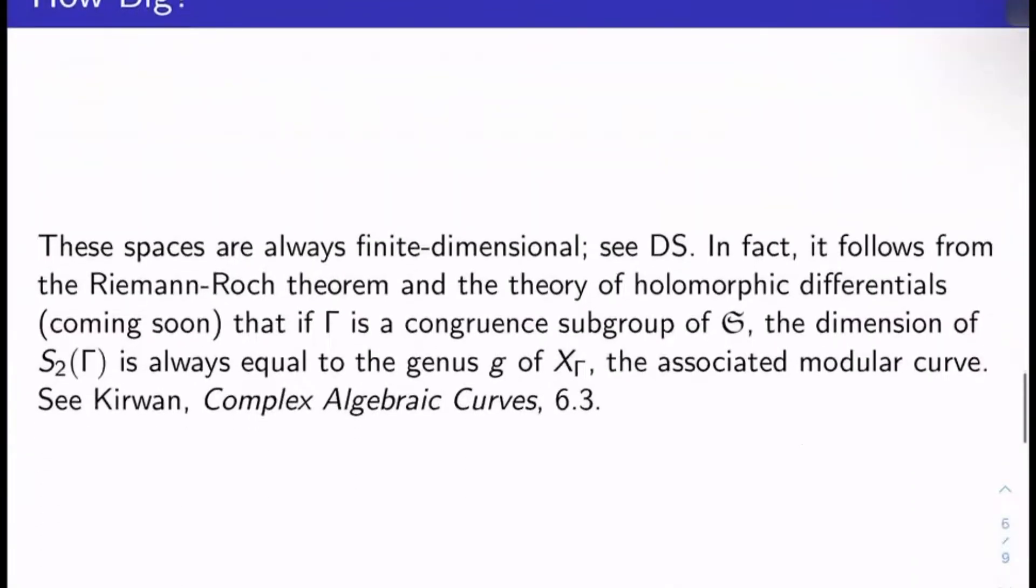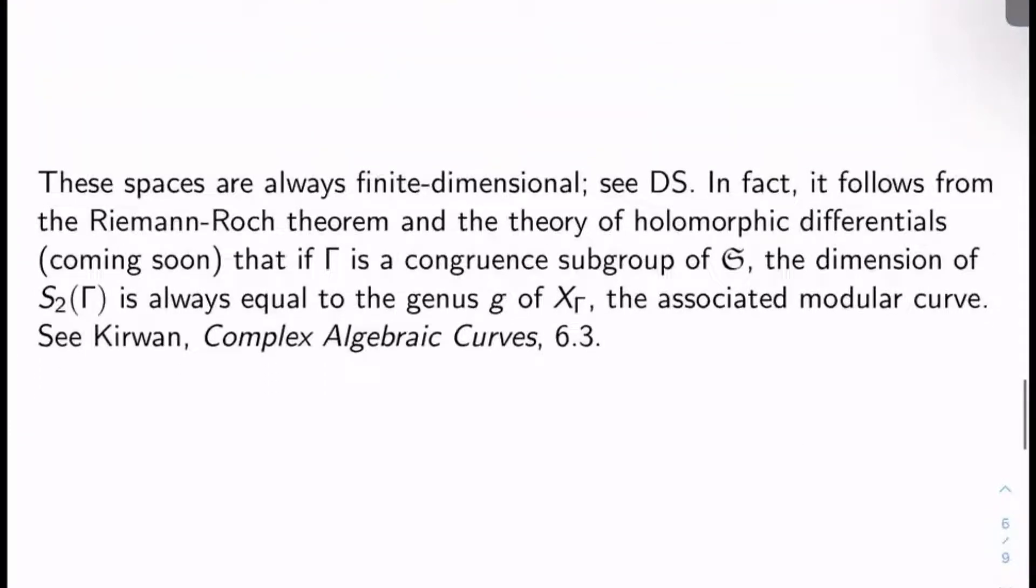Okay, how big are these spaces? The spaces M_k of Γ and S_k of Γ, by extension, are always finite dimensional. This is covered in Diamond and Shurman, for example. In fact, it follows from a powerful theorem known as Riemann-Roch and the basic theory of holomorphic differentials on modular curves, which we'll actually be discussing soon.